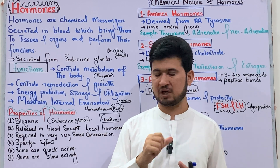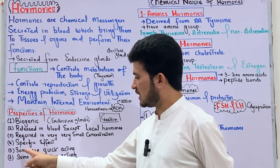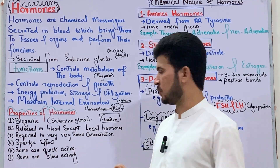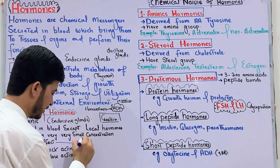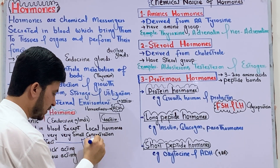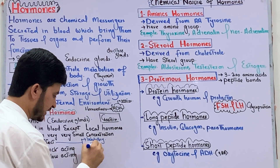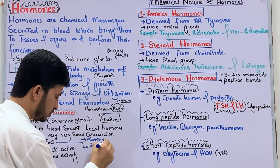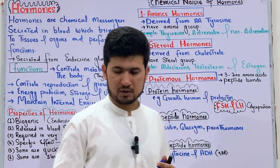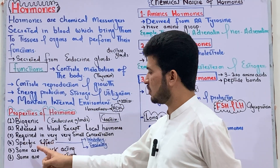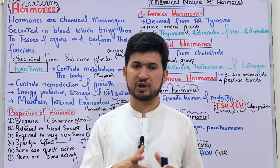Hormones work at very small concentrations yet produce full functions. The fourth property: hormones have a specific effect. The effect of hormones is specific — some hormones have an inhibitory activity, meaning they inhibit or suppress activity.